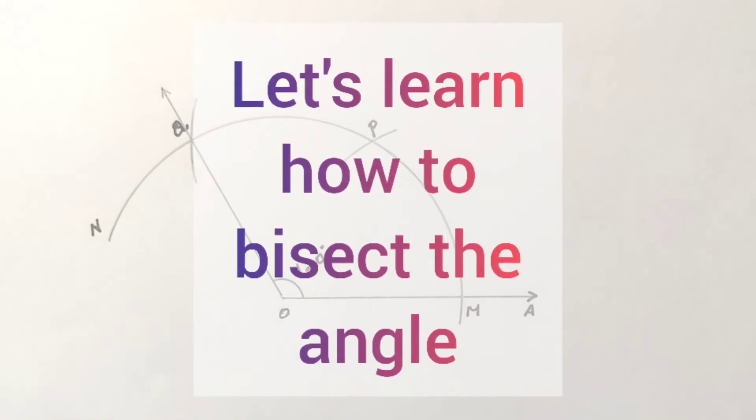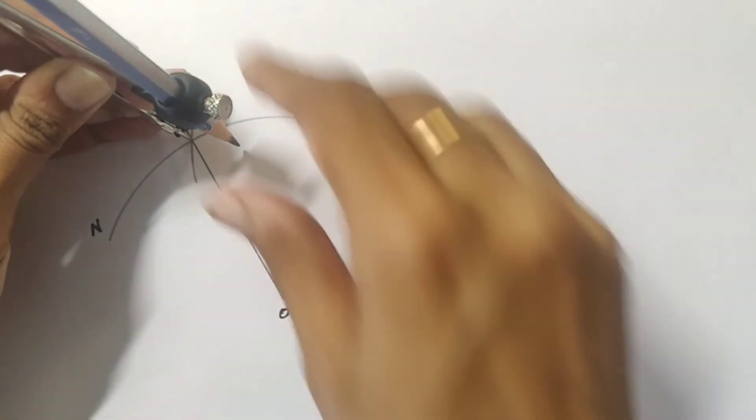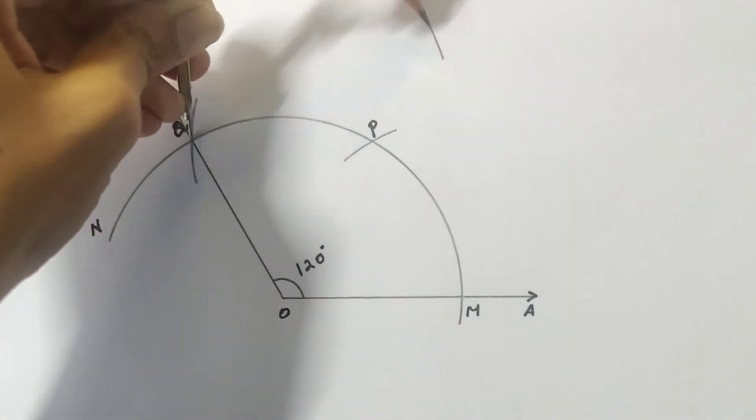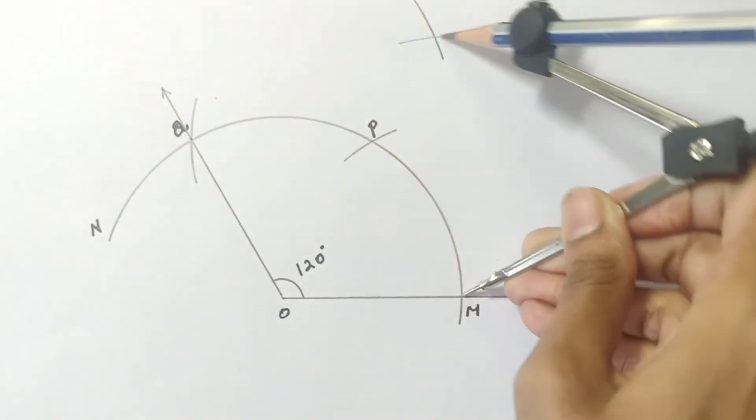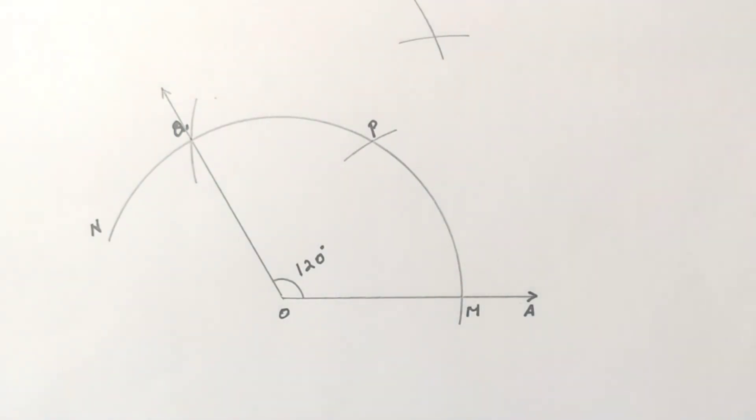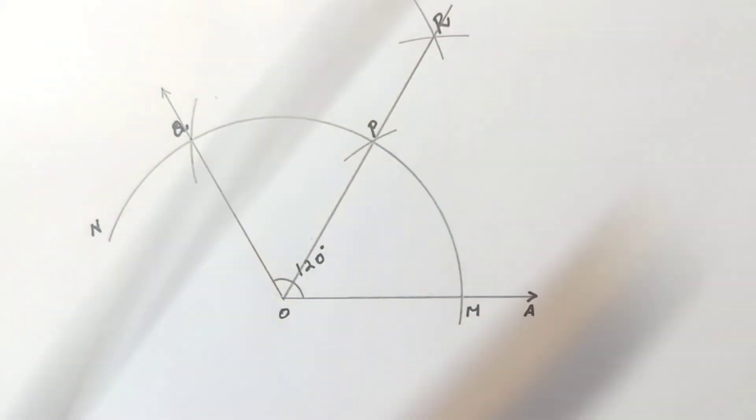Now that we have constructed the 120-degree angle, let's learn how to bisect it. With radius more than half of QM, draw an arc above, and with the same radius, cut the previously drawn arc. Let's label this point of intersection as R. Draw a ray passing through OR.